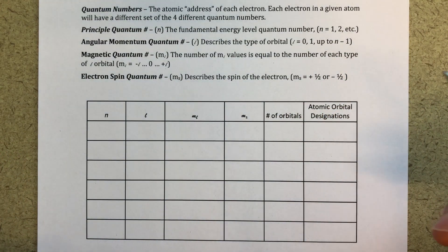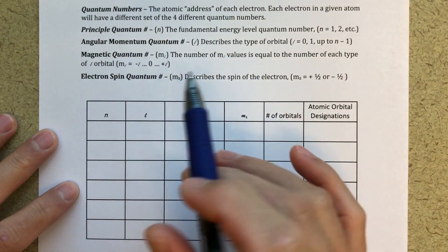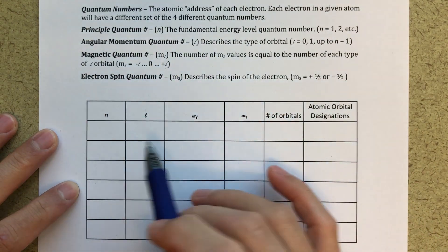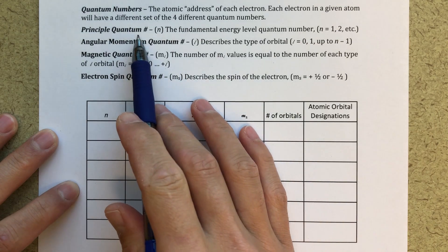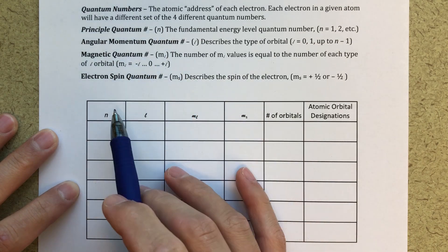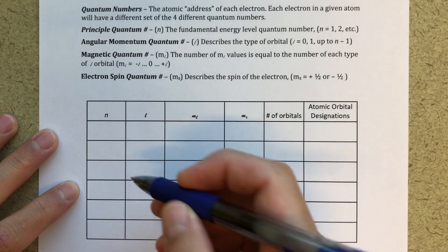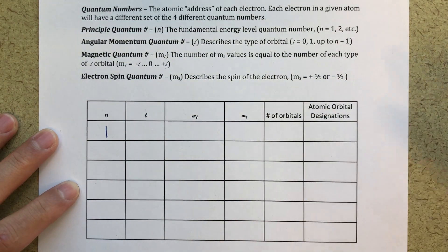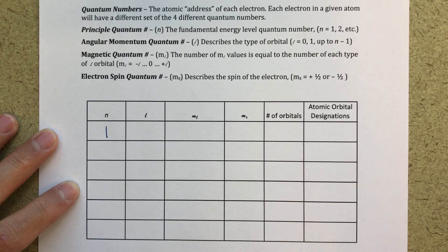The first thing I'm going to do is talk about the different quantum numbers. The principal quantum number is our n value. It's going to start at one — that's our first energy level — and it's going to go up from there: one, two, three, four, and so on.